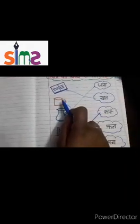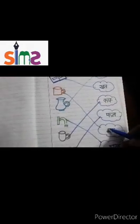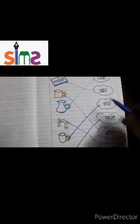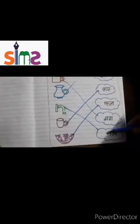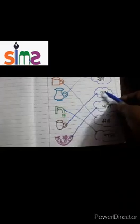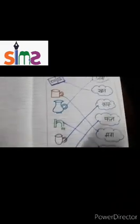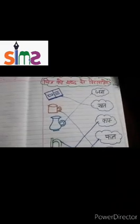Khat — khata, khat. Mag — maga, mag. Jag — jaga, jag. Nal — nala, nal. Cup — kapa, cup. Fal — fal, fal.